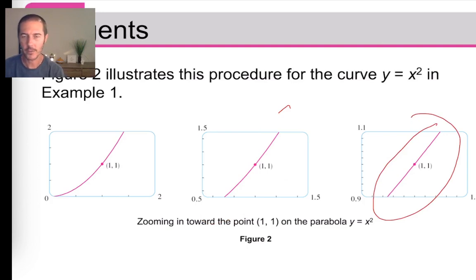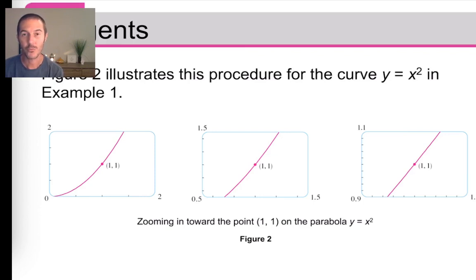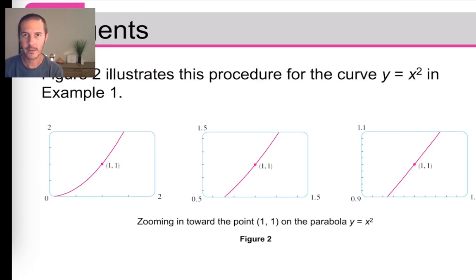One way to articulate what we're doing is that we're zooming in on a particular point where x = 1 and determining the slope — the rate of change, or change in y over change in x — of our function. We refer to that as the slope of the tangent line, but what we're really finding is the instantaneous rate of change at a particular point on the graph.